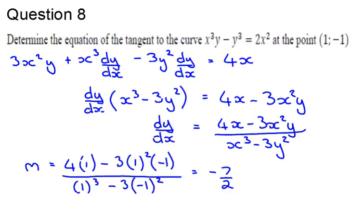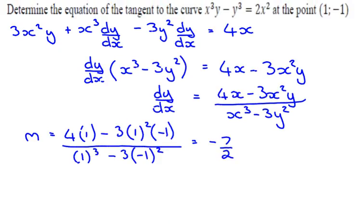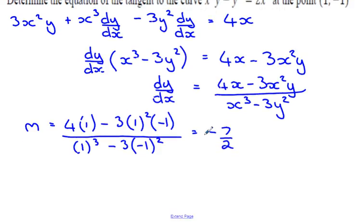Great, so I've got the gradient. Don't stop there. I think a few people did do that in the exam. You need to actually find the equation of the straight line. So, remember the way we do that. We go y minus the y value, which is y minus negative 1, which is y plus 1, equals the gradient, and x minus the x value, which is 1. Rearrange that. You get y equals negative 7 over 2, x plus 5 over 2.